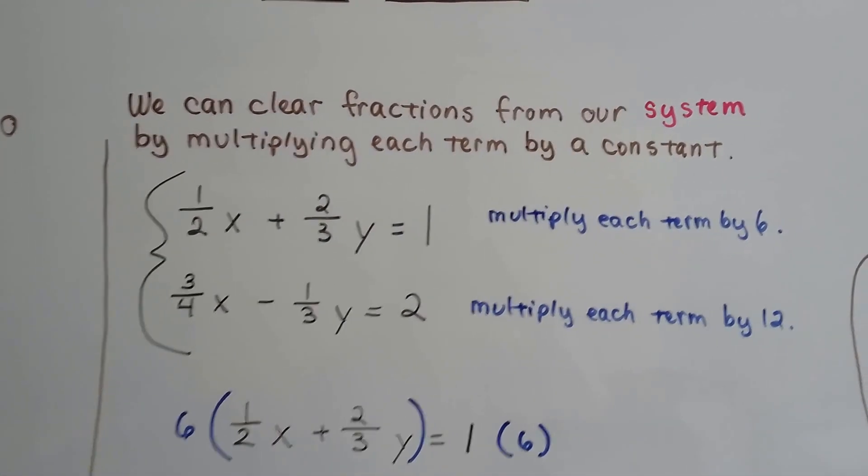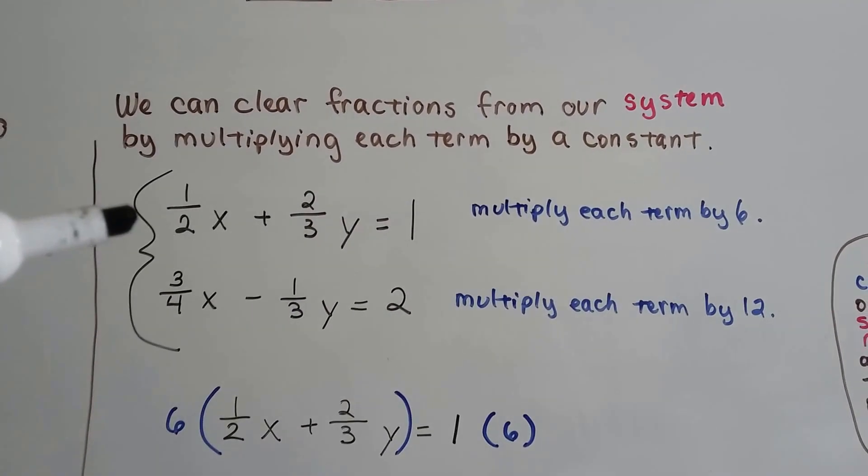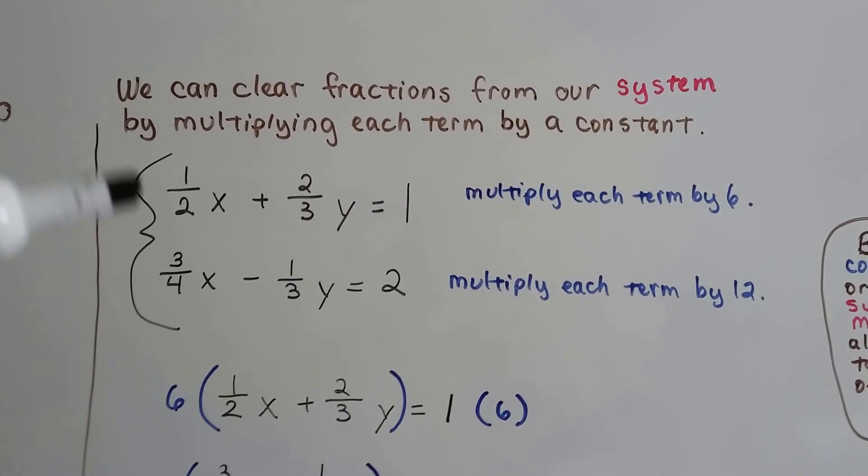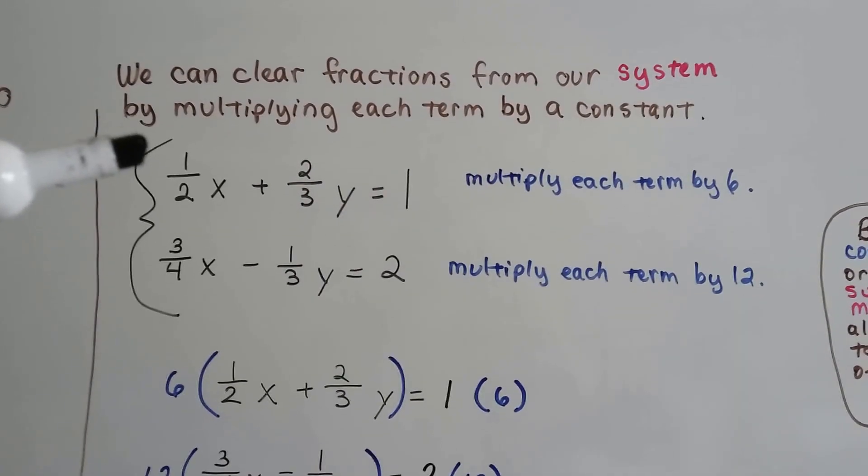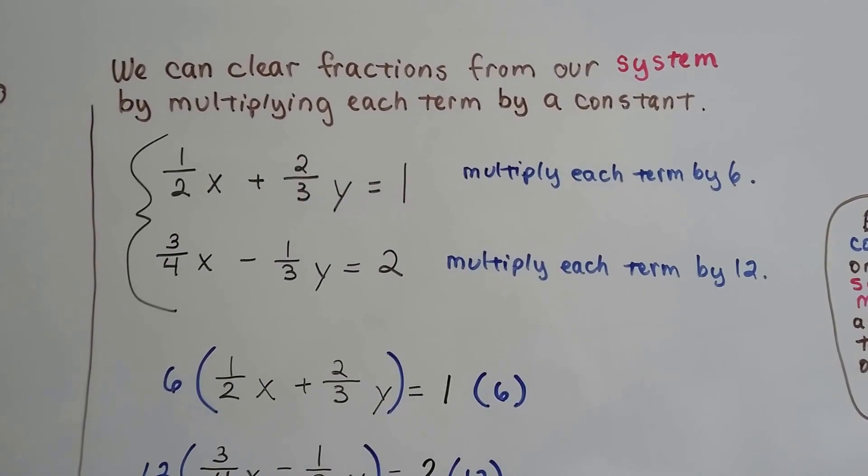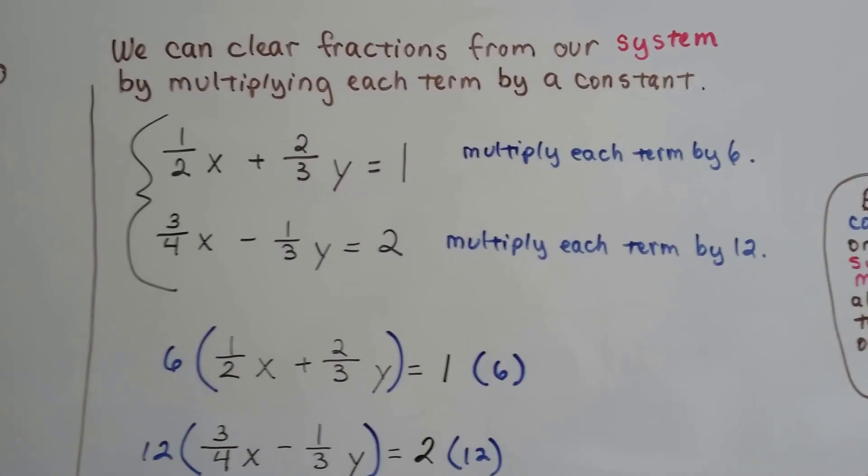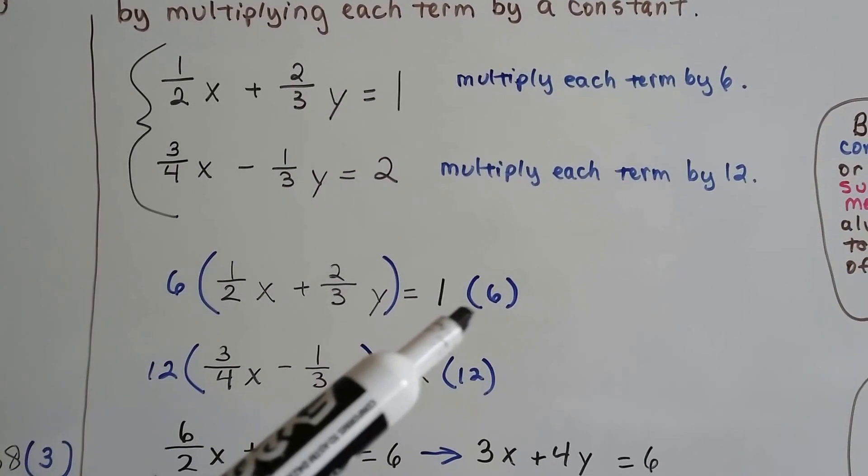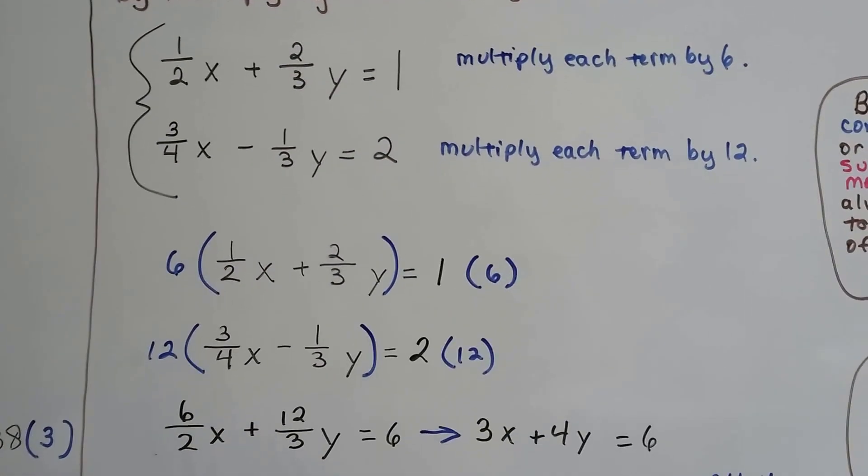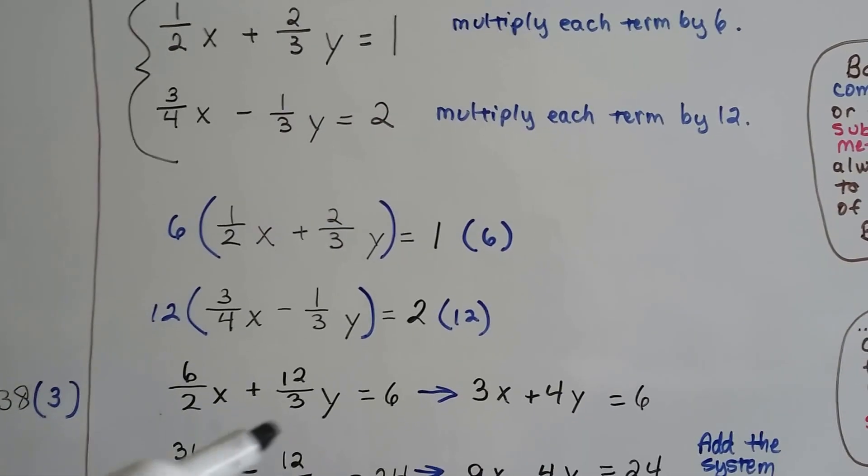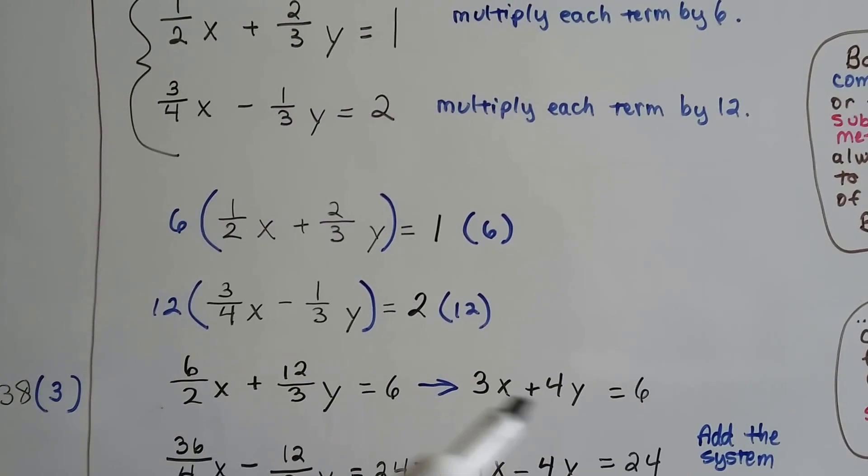We can clear fractions from our system by multiplying each term by a constant. If our system of equations is (1/2)x + (2/3)y = 1 and (3/4)x - (1/3)y = 2, this first equation can be multiplied by 6 and we can multiply each term here by 12. You know how I got that? 2 times 3 is 6, and 4 times 3 is 12. So now I'm going to multiply each term here by 6, distribute this 6 in to each of these. That's going to give us (6/2)x + (12/3)y = 6. When we simplify this, this becomes 3x, that becomes 4y, and we get 3x + 4y = 6. Now we get rid of the fractions.